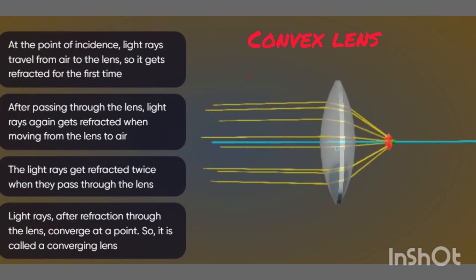Refraction occurs when light travels from one medium to another. In a convex lens, light enters from air into the glass, and the ray bends at the point of incidence. Again, when the light ray travels from the glass back to air, the medium changes and the light ray bends again. So light rays get refracted twice when passing through the lens. In a convex lens, light rays after refraction converge at a point — they actually meet at a point — so it is called a converging lens.